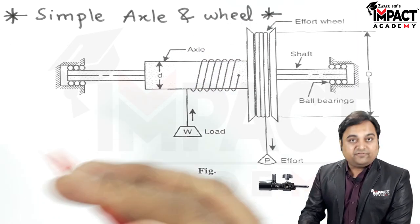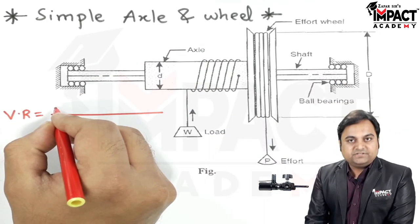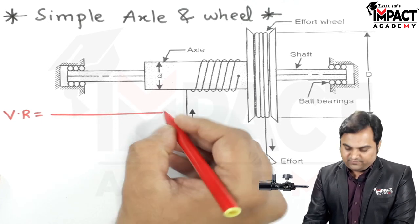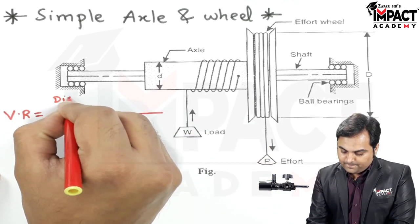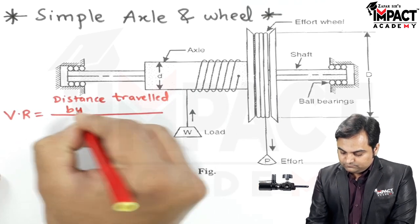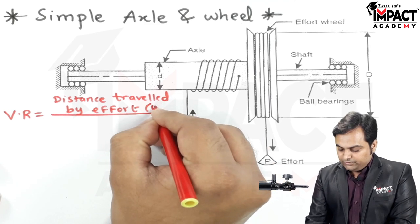Now velocity ratio is defined as the distance travelled by effort upon the distance travelled by load. The distance travelled by effort is denoted by Y.